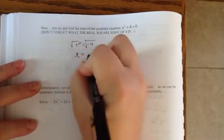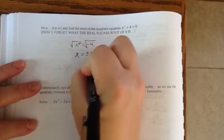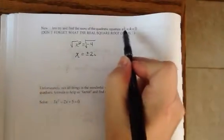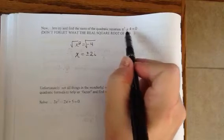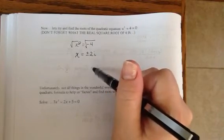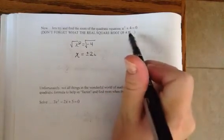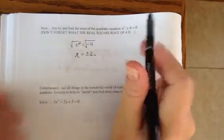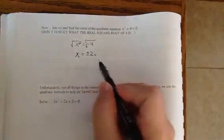So x is going to equal plus or minus 2i. And that's really important because the degree of this polynomial right here is 2, which means you have to account for two zeros. This polynomial, or this quadratic, is going to have two zeros, a plus 2i and a minus 2i.